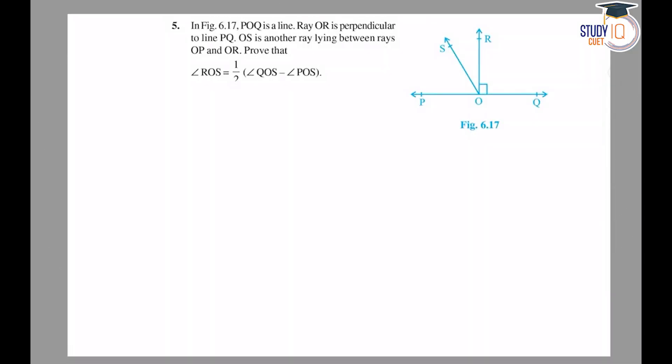Hello students, this is NCERT Maths Class 9, Exercise 6.1, Question Number 5. The question is: In Figure 6.17, POQ is a line and OR is perpendicular to line PQ, so angle ROQ is 90 degrees. Similarly, angle ROP is 90 degrees.